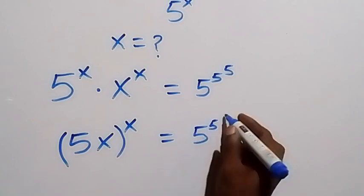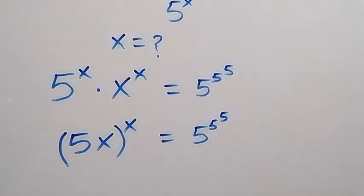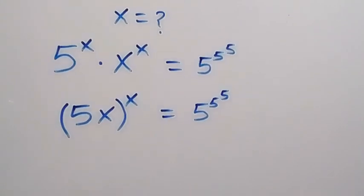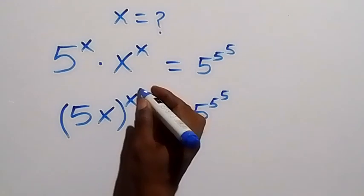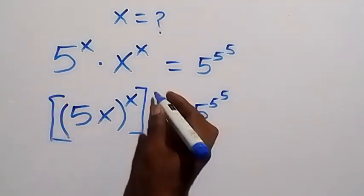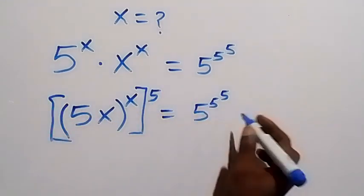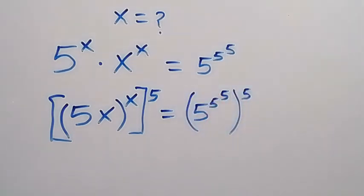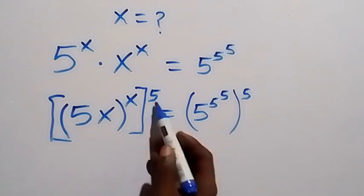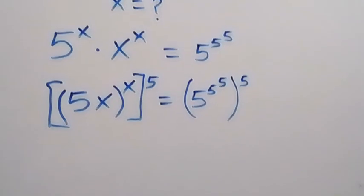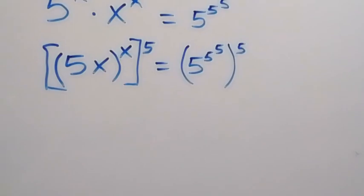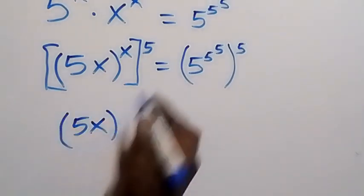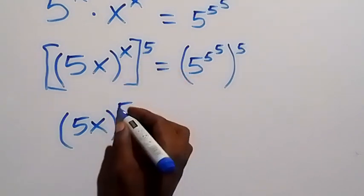This equals 5 to the power of 5 to the power of 5. From here, let's raise both sides to the power of 5. From the law of indices, the powers multiply, and on this side we have 5x to the power of 5x.